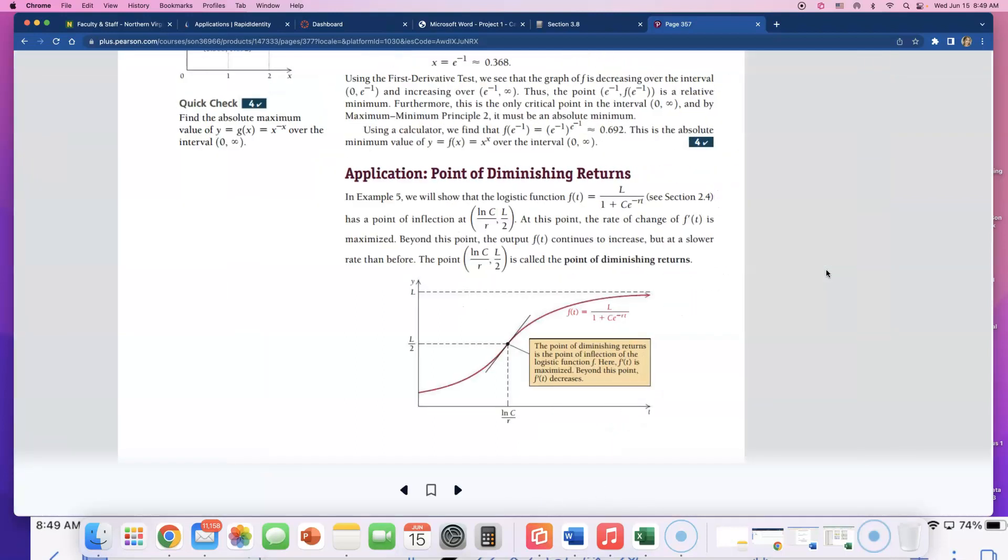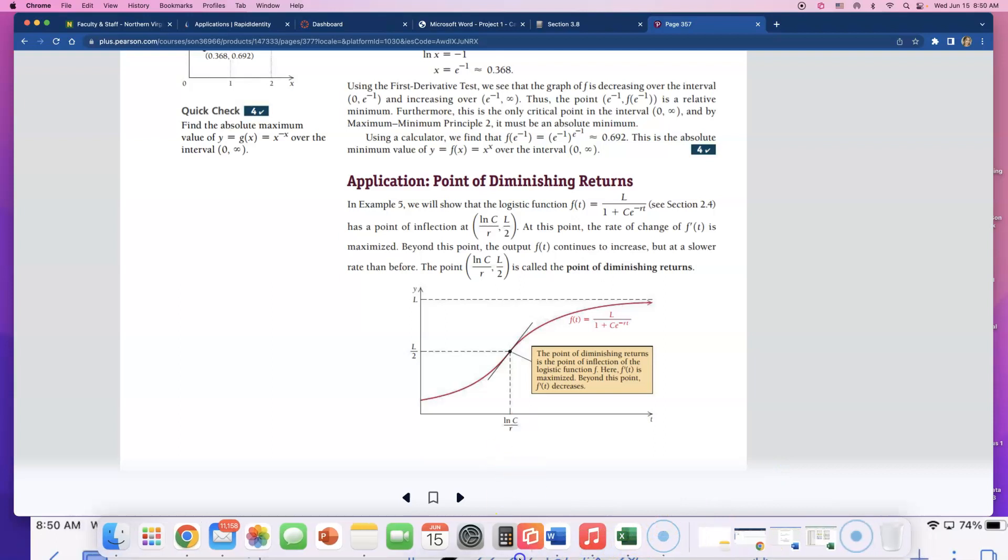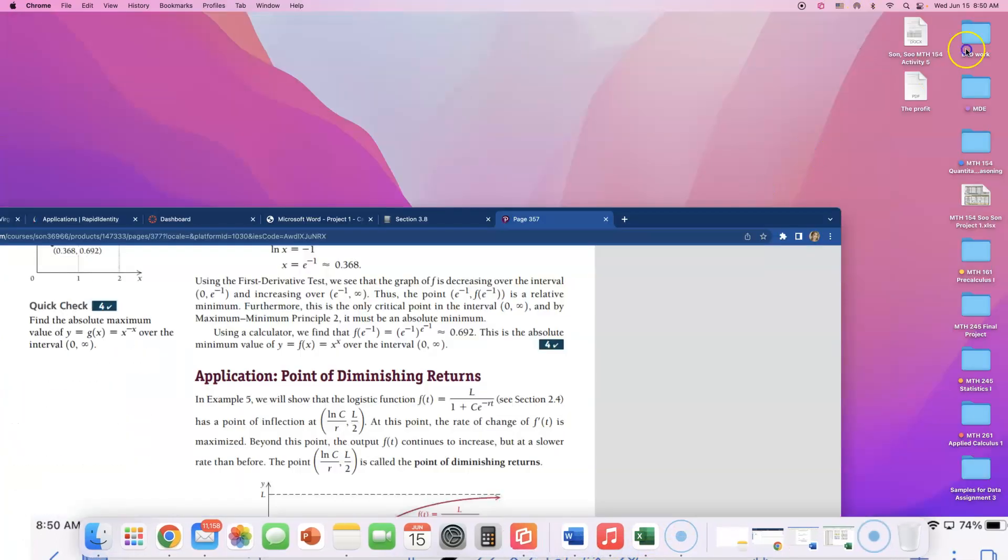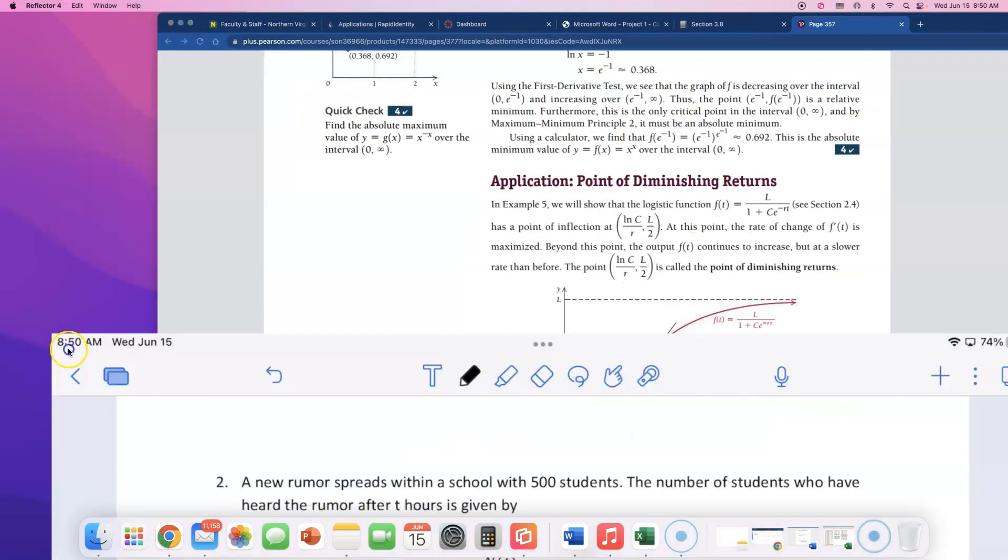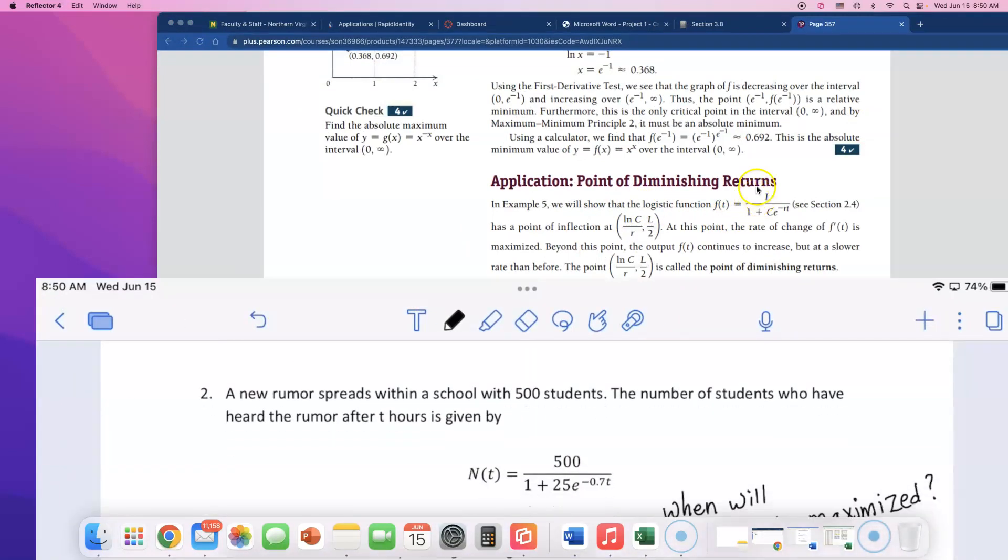Go a couple pages to the right and you will see a section called Application: Point of Diminishing Returns. They talk about the example and I know you guys read this section. You see the section, the logistic function that we are actually working with. So you see the logistic function they're giving us?